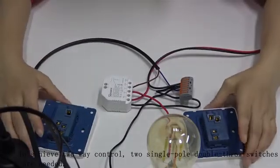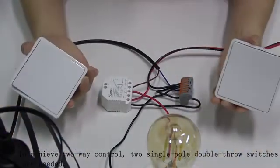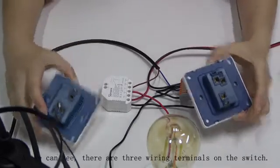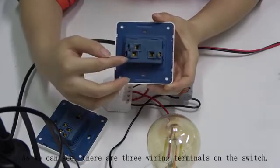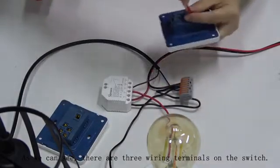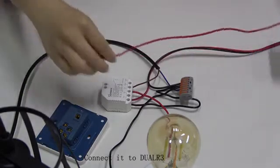To achieve two-way control, two single-pole double-throw switches are needed. As we can see, there are three wiring terminals on the switch: L, L1, and L2. L is the common end of the switch connected to DUA3.